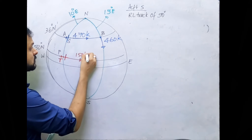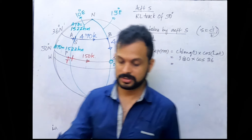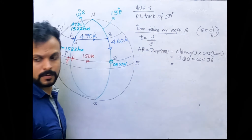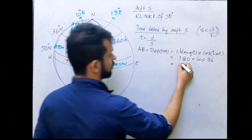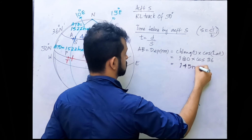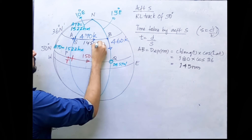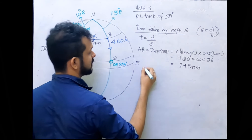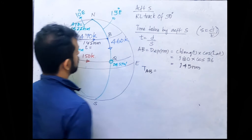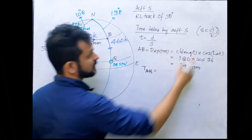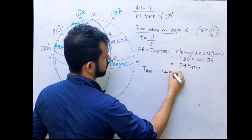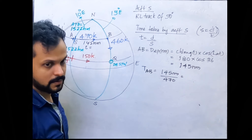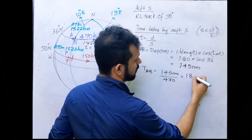Aircraft T is traveling east at 150 knots; we don't yet know how far. Now let's calculate the departure for segment A to B. The departure is 118 × cos 36°, giving 145 nautical miles. So the distance A to B is 145 nautical miles. The time taken is distance divided by speed: 145 ÷ 470, which gives approximately 18.5 minutes.